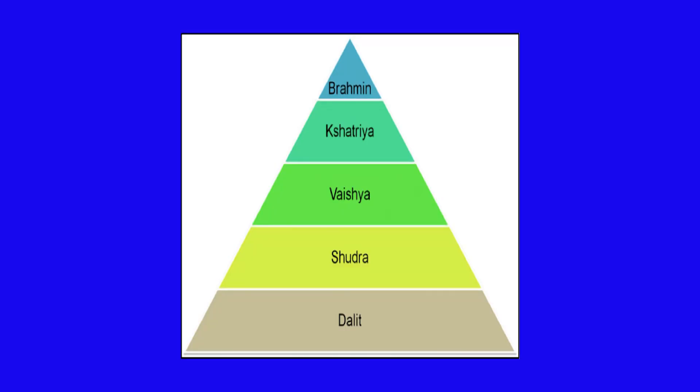Let us go into the important question of why separate electorates were introduced for the depressed classes. The depressed classes were the most suppressed in India. They were outside the four-caste system — Brahmin, Kshatriya, Vaishya, Shudra — and they were subject to much degradation.